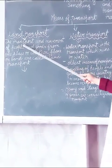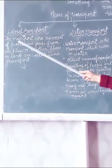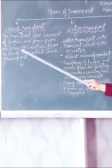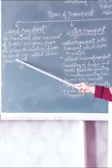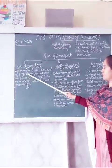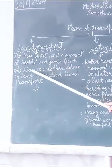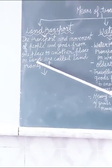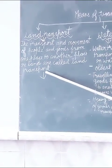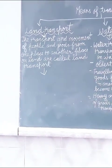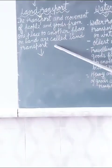What is land transport? The transport and movement of people and goods from one place to another place on land are called land transport. Keep in mind the key phrase: 'on land'. When we are going from one place to another place on land, that is known as land transport.